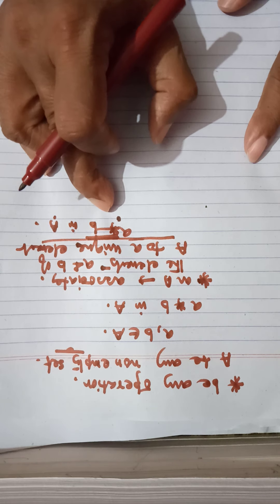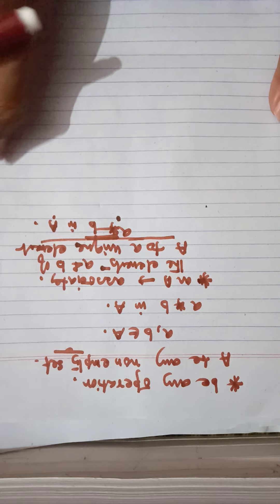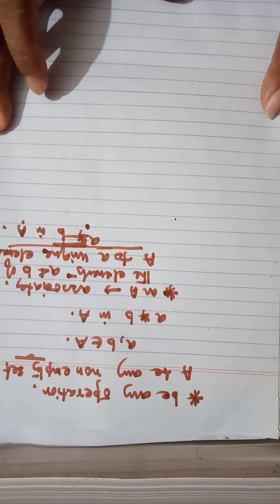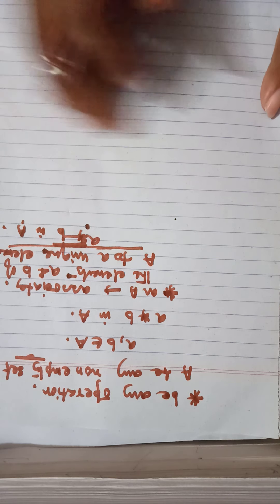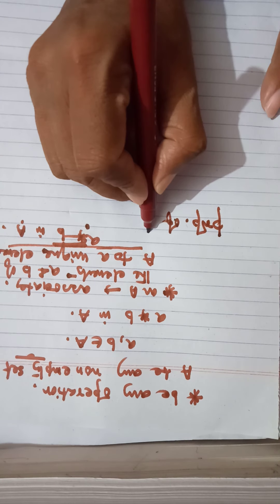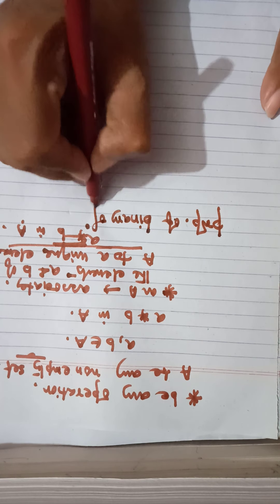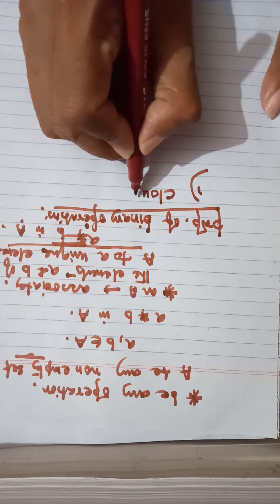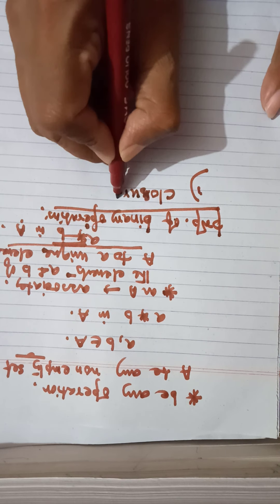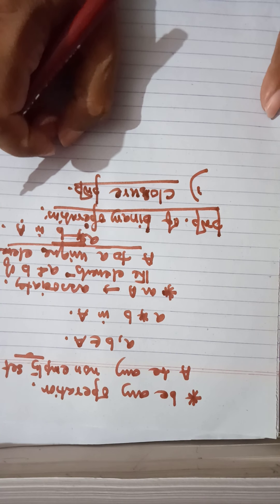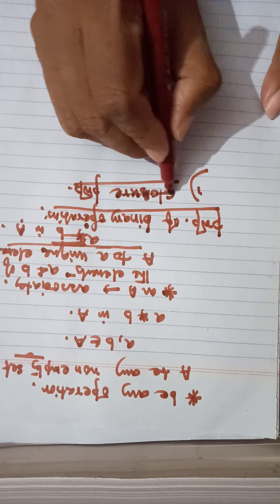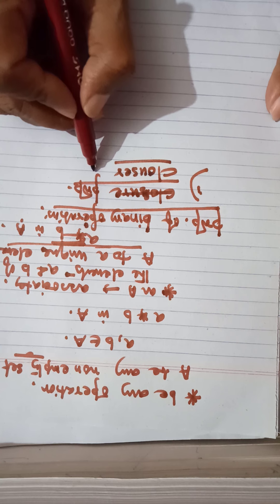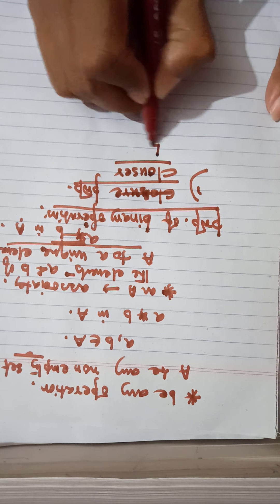Note: do not take minus as a binary operation on integers — it is not appropriate there. Now, a few important properties of binary operations. When a question gives an operation and a set and asks you to prove properties hold, keep these in mind. First: closure property.